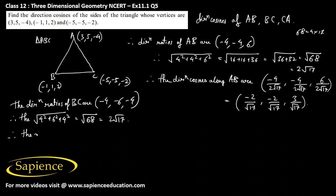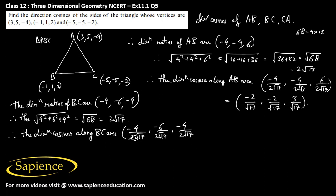Therefore, the direction cosines along side BC are: minus 4 by 2 root 17, minus 6 by 2 root 17, and minus 4 by 2 root 17. Simplifying, that will be equal to minus 2 by root 17, minus 3 by root 17, and minus 2 by root 17.